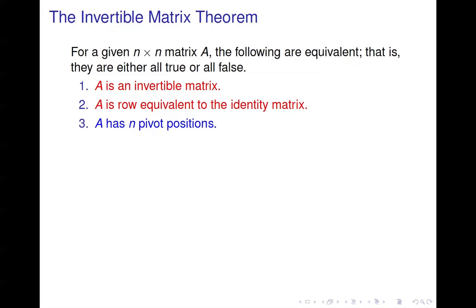Another statement: A has n pivot positions. This is actually the key to the whole theorem. Everything here you can relate to pivot positions, and that's how I'd recommend you approach this. You need to know what this theorem says and be able to write down parts of it. Rather than memorizing it, I suggest relating everything back to pivot positions, since that's what we've done up to now.